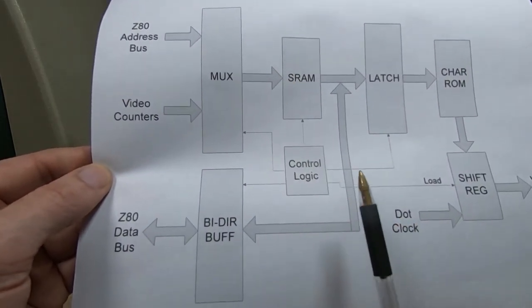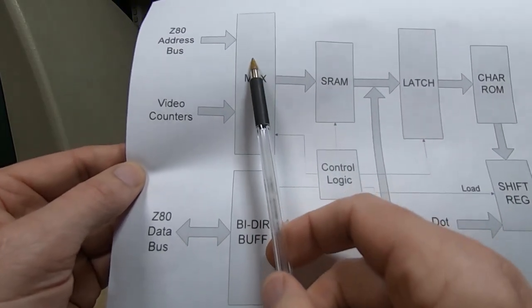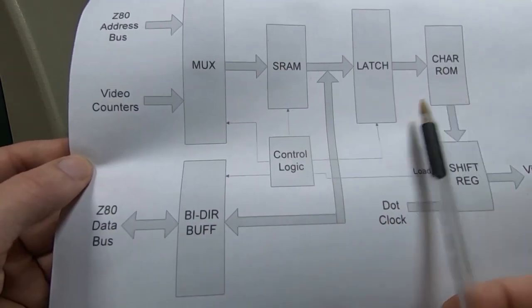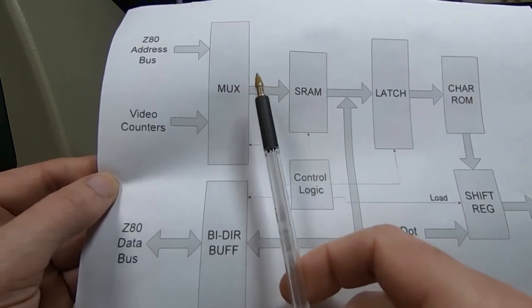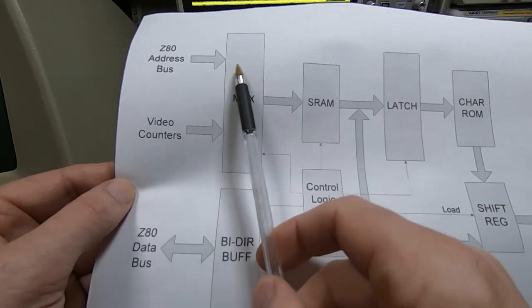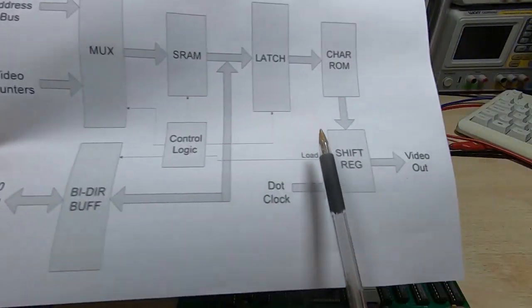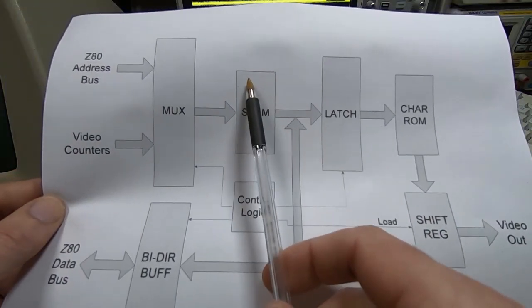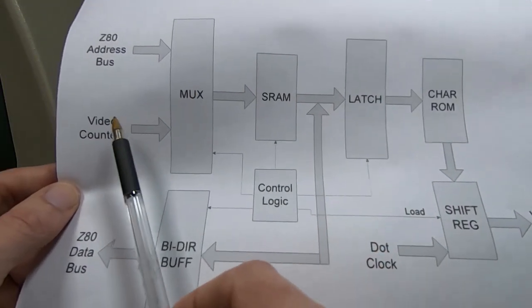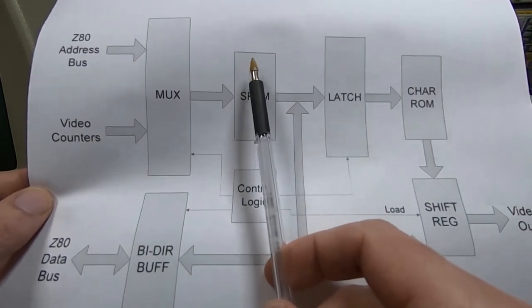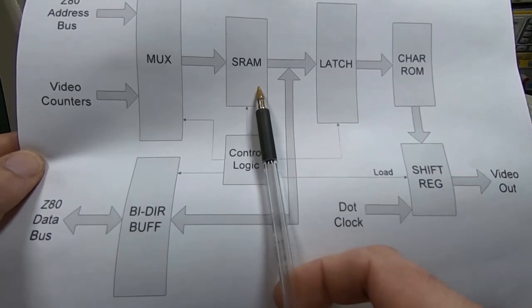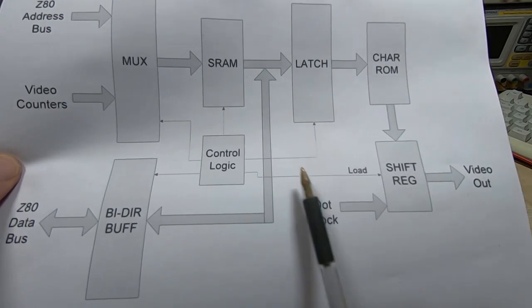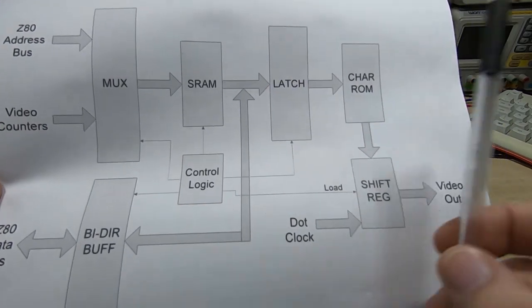When we switch to the Z80 address, the scanning of the display is still going on. Although it only takes a few nanoseconds to update the SRAM, during that time if the shift register is loaded it will be loaded with the wrong value. For example, if the scanning video counters were at this location but the Z80 wants to read or write down here, then the wrong address would be selected for the scanning circuits and the wrong value would be sent through to the latch.